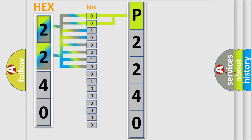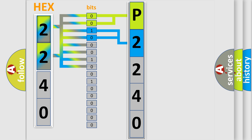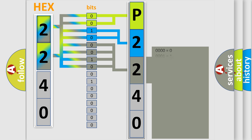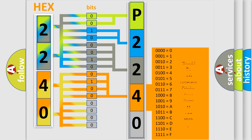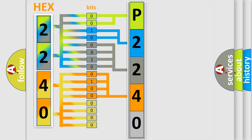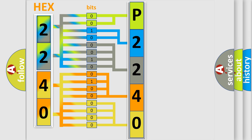The next two bits again determine the second character. The last four bits of the first byte define the third character of the code. The second byte is composed of a combination of eight bits. The first four bits determine the fourth character of the code, and the combination of the last four bits defines the fifth character. A single byte conceals 256 possible combinations.